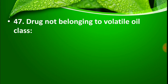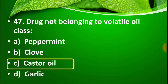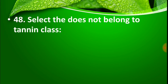Question number 47: Which drug does not belong to the volatile oil class? Options: Option A: Peppermint, Option B: Clove, Option C: Castor oil, Option D: Garlic. The right answer is Option C, Castor oil. Castor oil is a fixed oil mainly used in various emulsion preparations and also as a laxative. Peppermint oil, Clove oil, and Garlic oil are volatile oils.